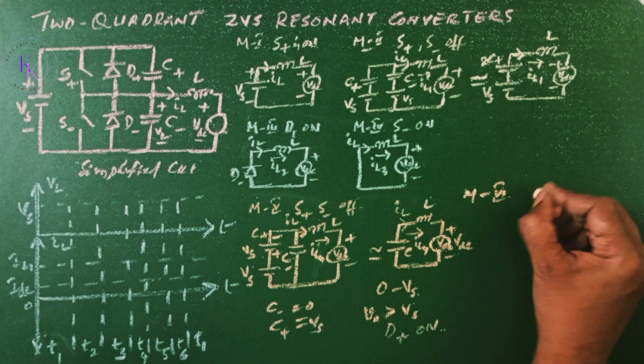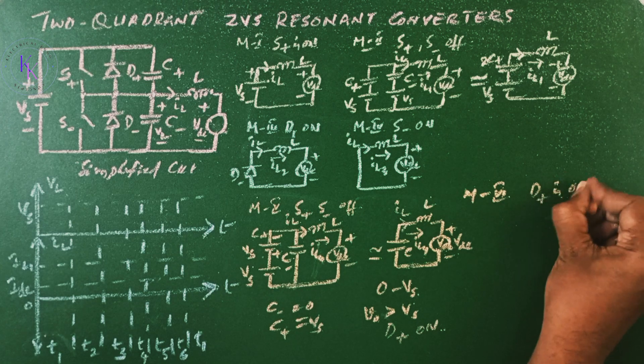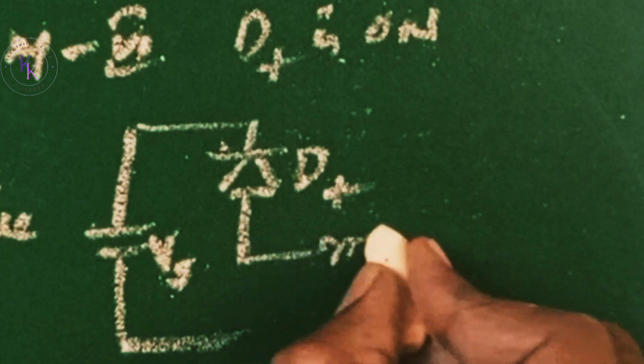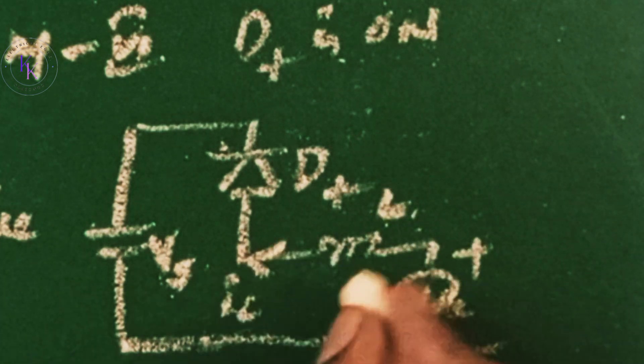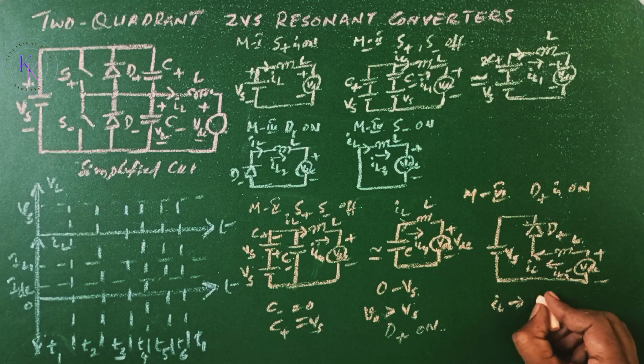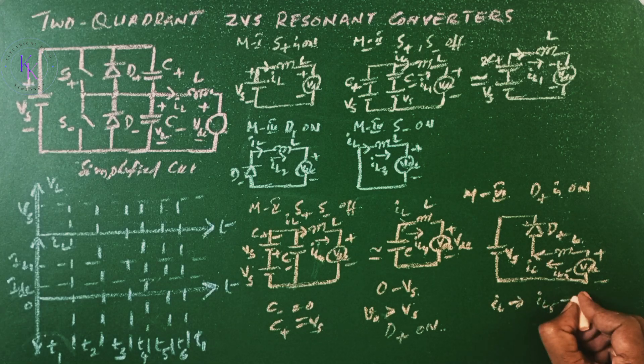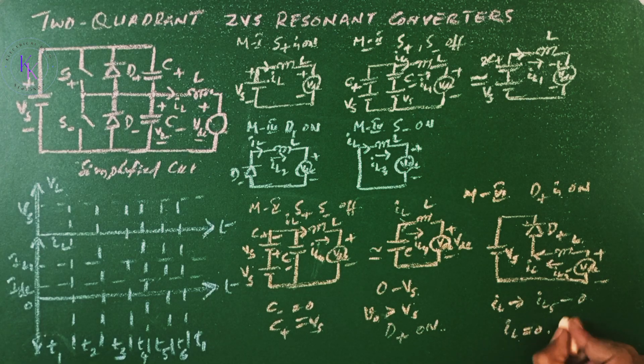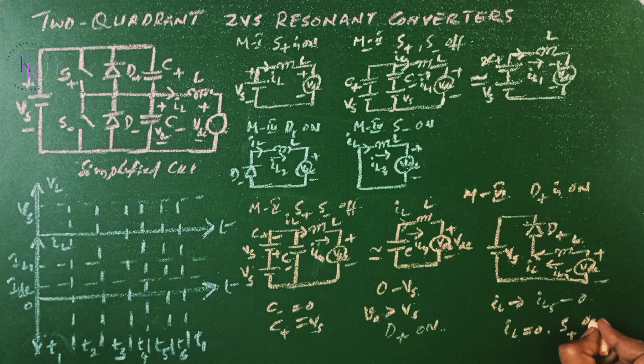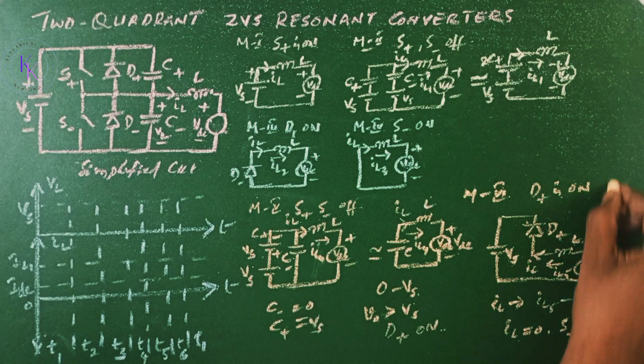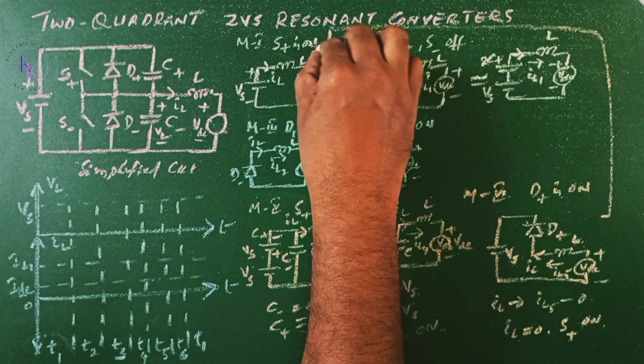Mode 6 when D plus is on and the equivalent circuit... In mode 6 IL falls linearly from IL5 to 0. This mode ends when IL becomes equals to 0 and S plus is turned on and the cycle repeated. Then from 6 it will go to 1.